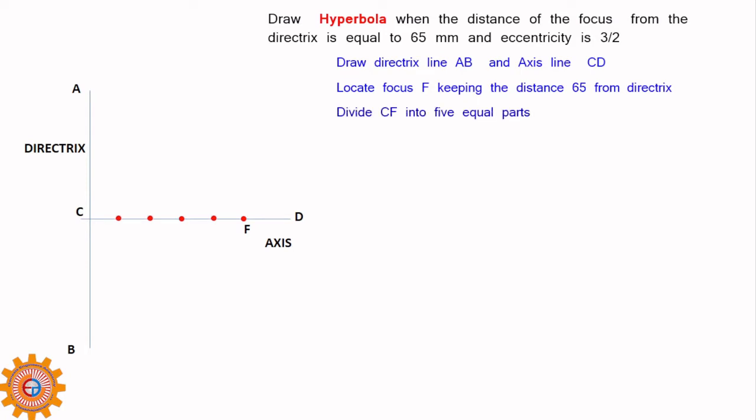Now, you have to divide that CF into 5 equal parts. Why 5? As I said earlier CF that is eccentricity is 3 by 2. So you have to take 3 plus 2 as 5. That is why we have to divide that into 5 equal parts.